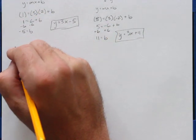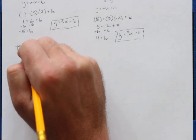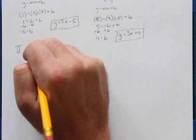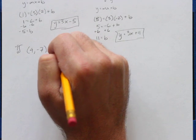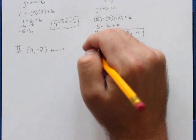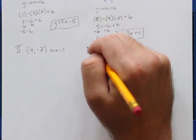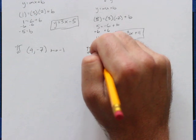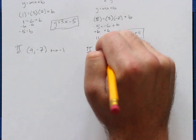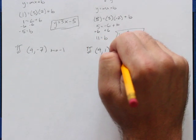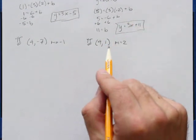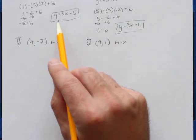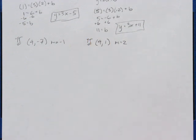Let's have you do one. Your point is (4, negative 7) and your slope is negative 1. Let's have you do another one: (4, 1) is your point and your slope is 2. Go do these two — write them in slope-intercept form and let's see how you did. Pause and go.